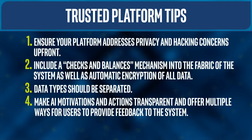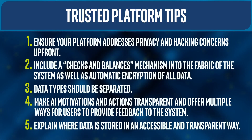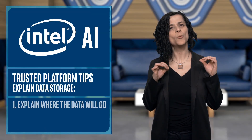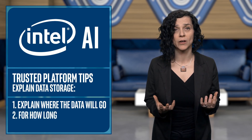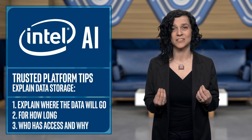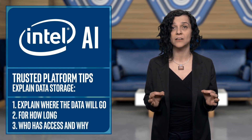Fourth, make AI motivations and actions transparent and offer multiple ways for users to provide feedback to the system. The system should also explain how and when feedback will be executed. Fifth, explain where data is stored in an accessible and transparent way — where the data will go, for how long, and who will be able to access it and why.